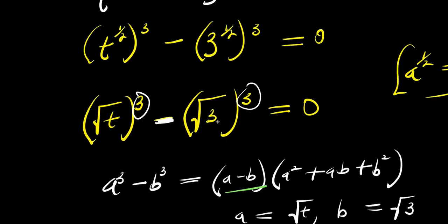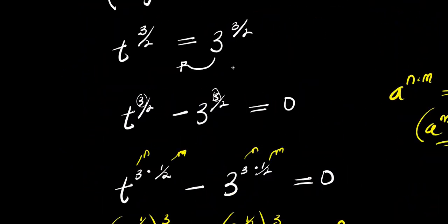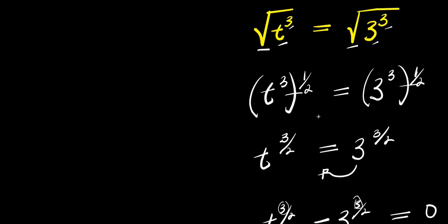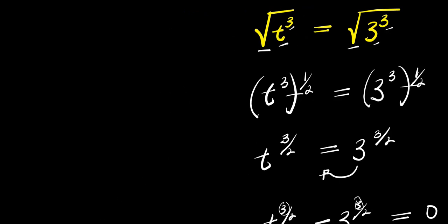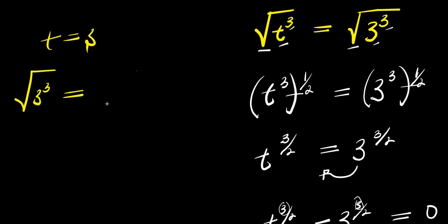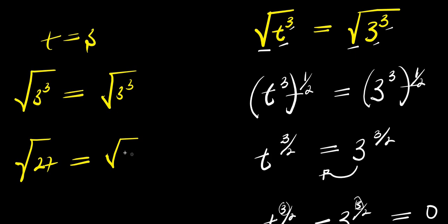We have one real solution which is t equals three. If you insert three into the original equation, you have square root of three cubed equals square root of three cubed, which is square root of twenty-seven equals square root of twenty-seven. This checks out.